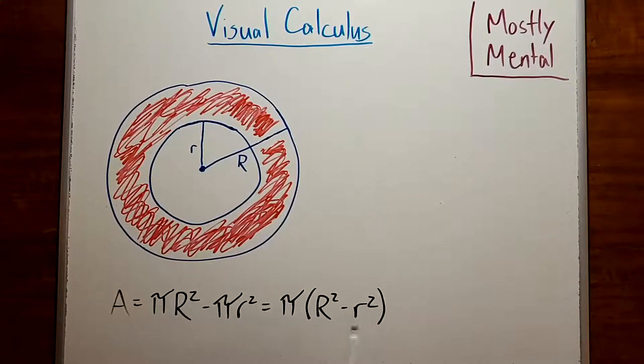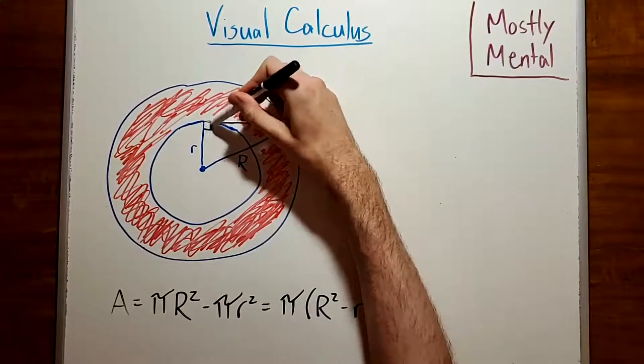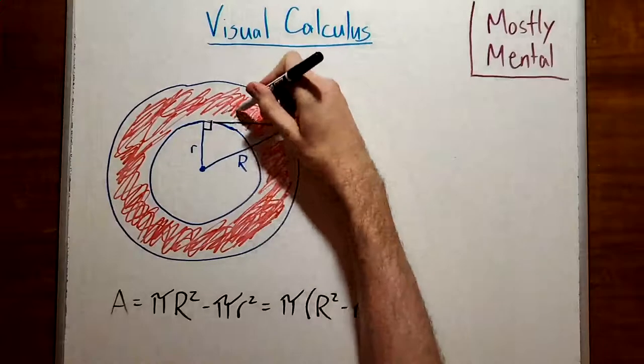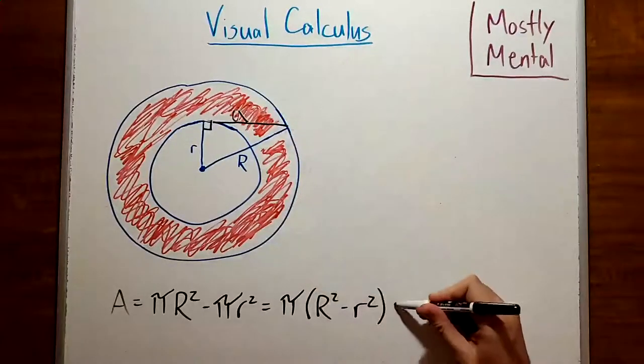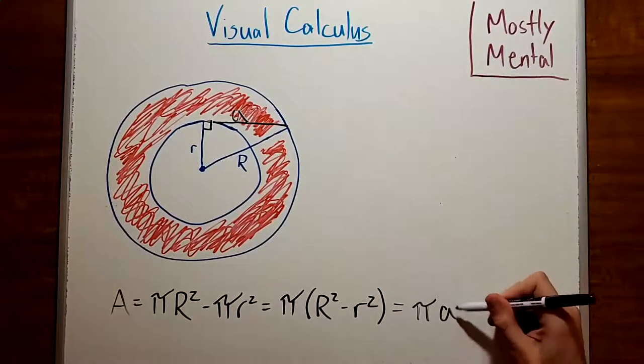Hang on, that's two squares in a geometry problem. That just cries out for Pythagoras. And sure enough, we can find a right triangle here, using a tangent segment to this inner circle. If we call this side length a, then by the Pythagorean theorem, this area is going to be π a squared.